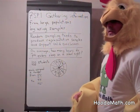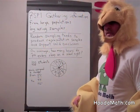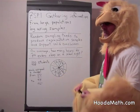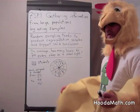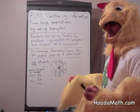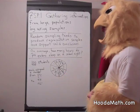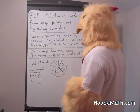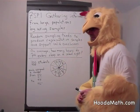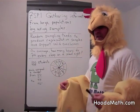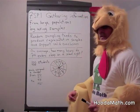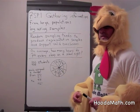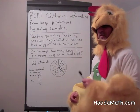Sometimes we want to gather information and do it in a very efficient way. Instead of polling everybody, we poll a sample of that population. One way is to do a random sample. A random sample says that each person in the population has an equal chance of being represented in a sample.